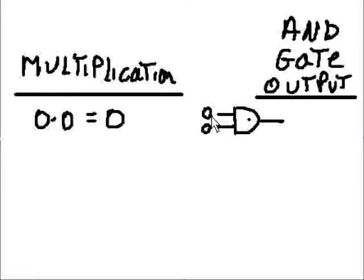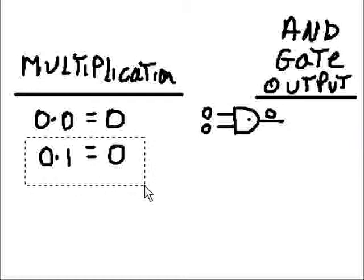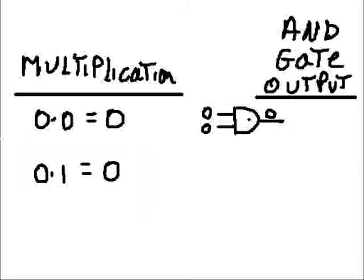Because 0 ANDed with 0 will give you a 0. The next number would be 0 times 1. 0 times 1 is equal to 0. In an AND gate, if one input is 0 and the other input is a 1, then 0 ANDed with a 1 will give you a 0.